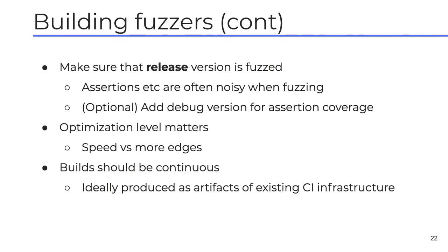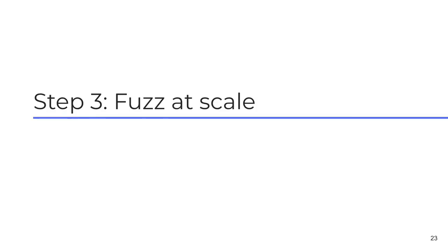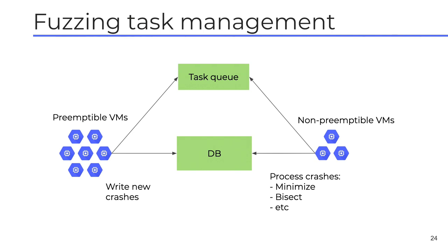These builds should be stored somewhere easily accessible by your fuzzing infrastructure, maybe in the cloud. The majority of our fuzzing is done on cheap preemptible or spot cloud VM instances — they are way cheaper but can be shut down at any time. The fuzzing itself can be interrupted without much harm, so we can scale cheaply. However, we also have a small number of more expensive machines for important tasks that can't be interrupted. All tasks are distributed by a task queue for every platform, and we have a global data store where we write crash data.